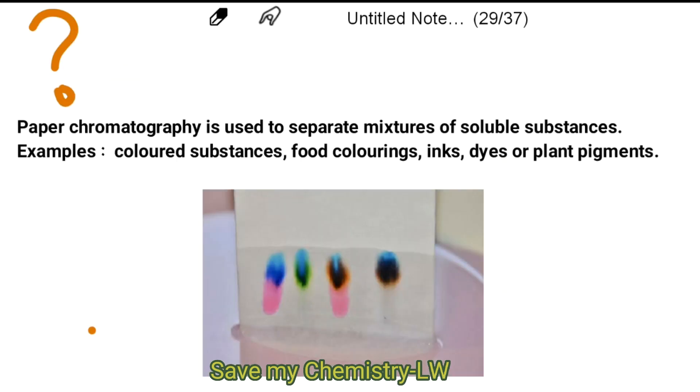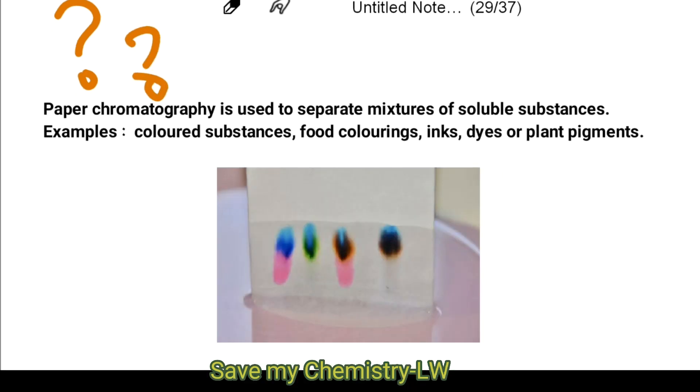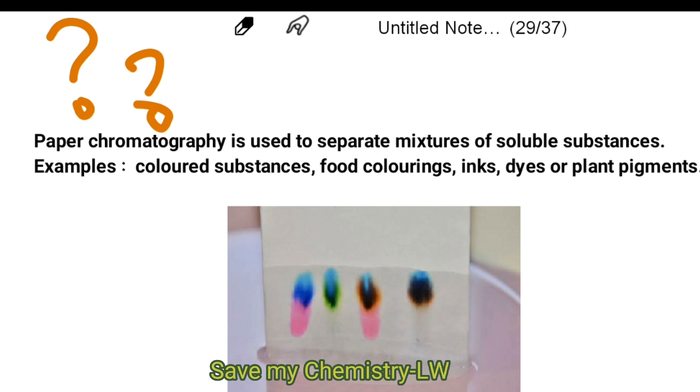What is paper chromatography? Paper chromatography is used to separate mixtures of soluble substances. Examples: colored substances like food colorings, inks, dyes, or plant pigments.